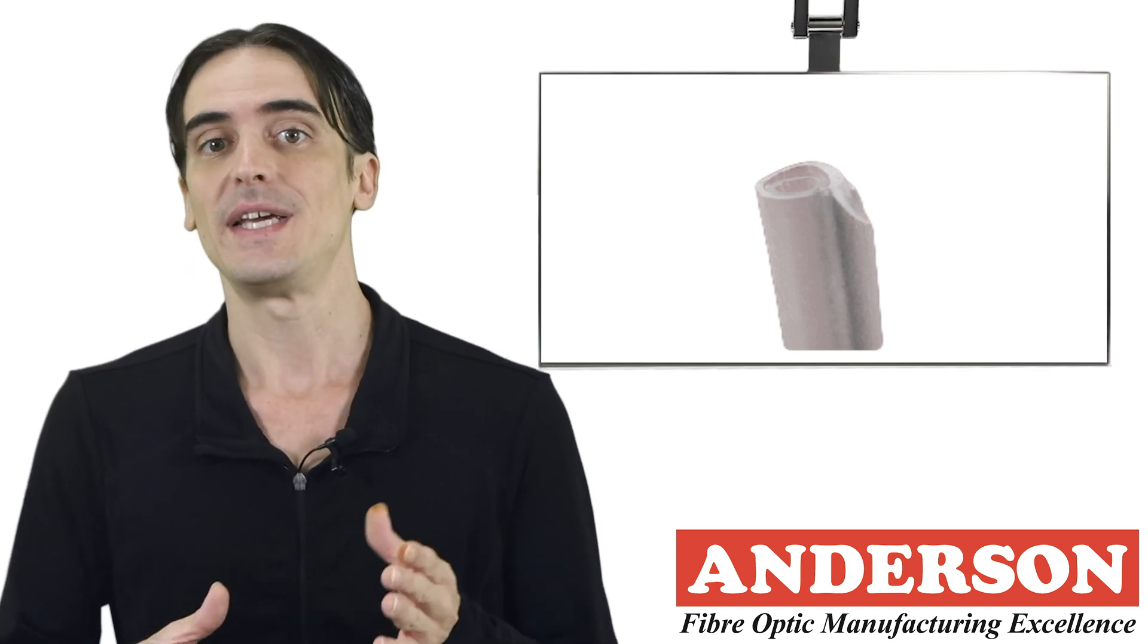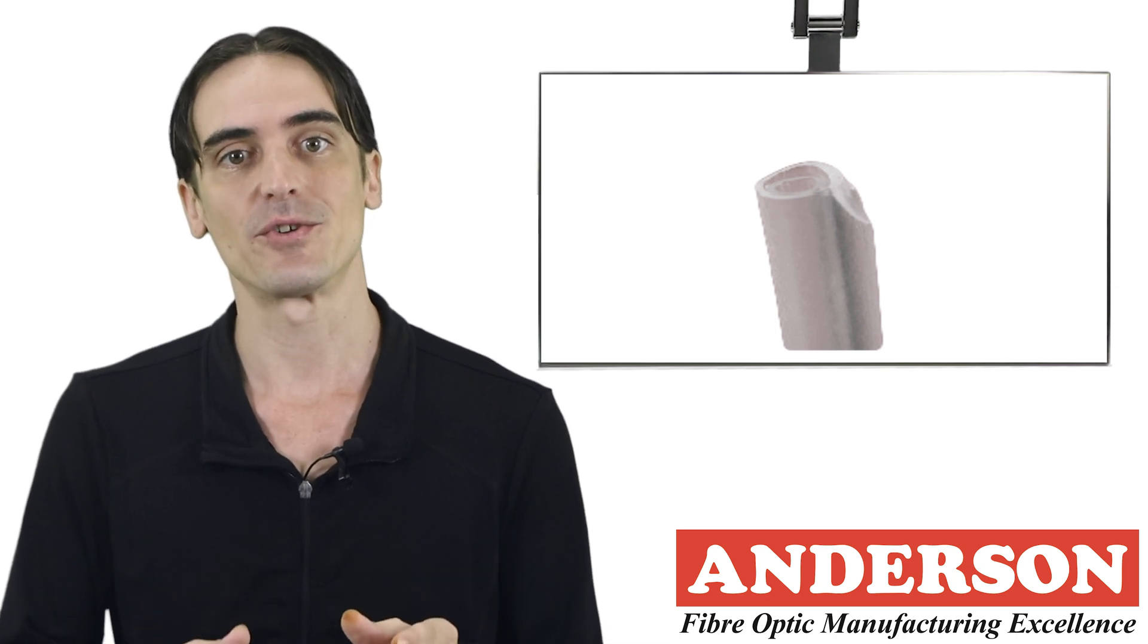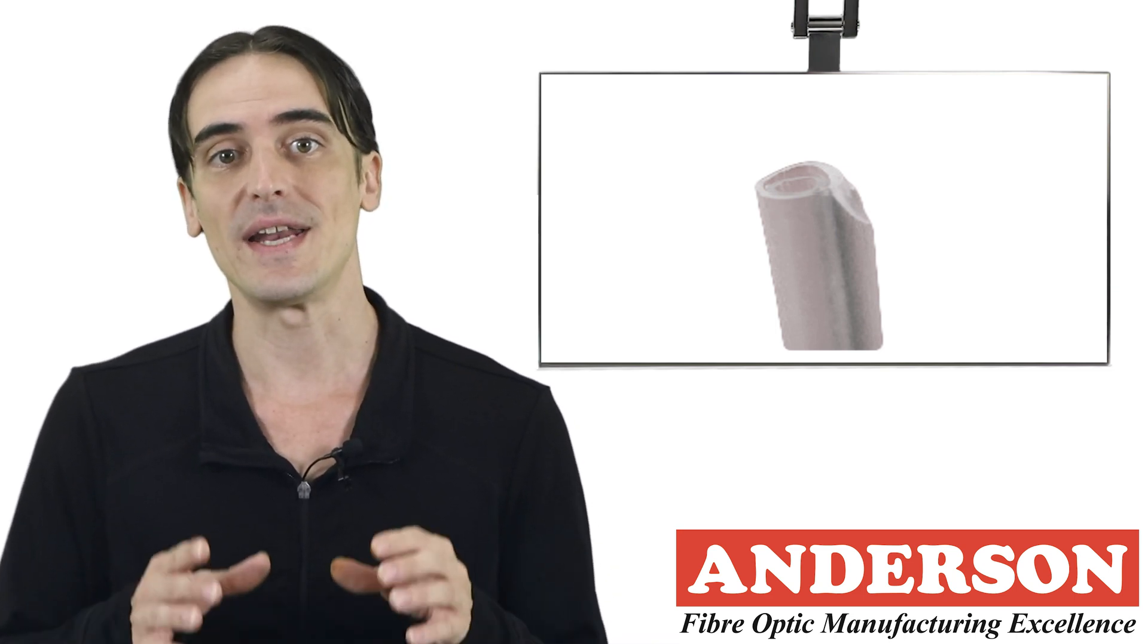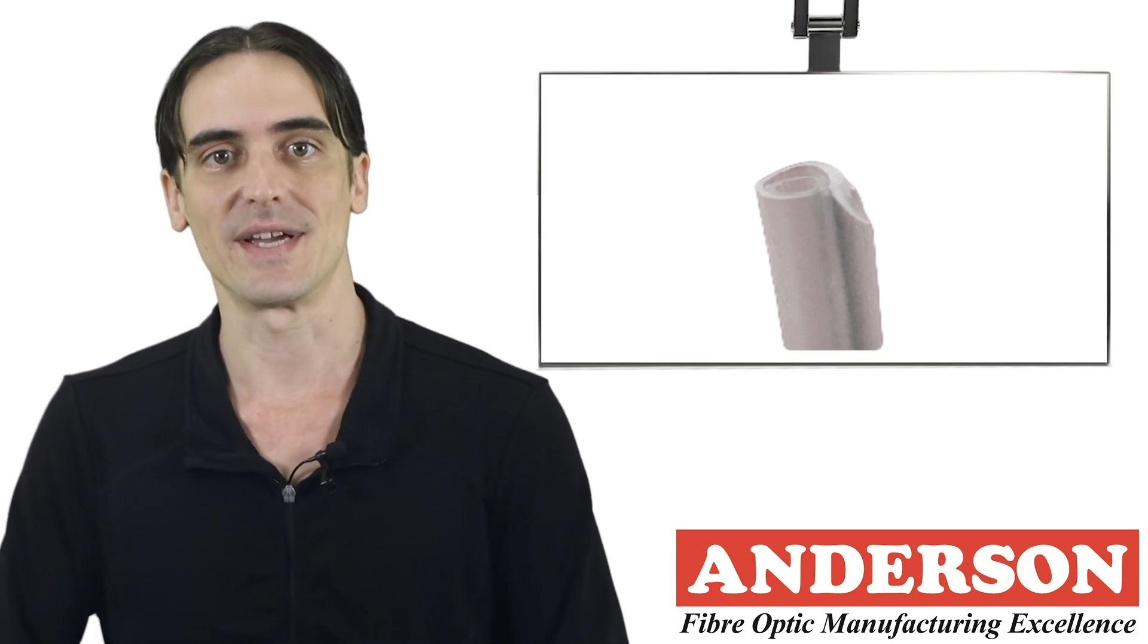An outer sleeve of polyolefin heat shrink that reduces in size when heat is applied and places pressure on the inner sleeve to ensure an air tight and water tight joint. The outer sleeve also holds all three components together.